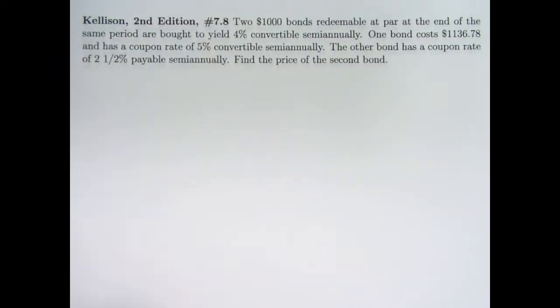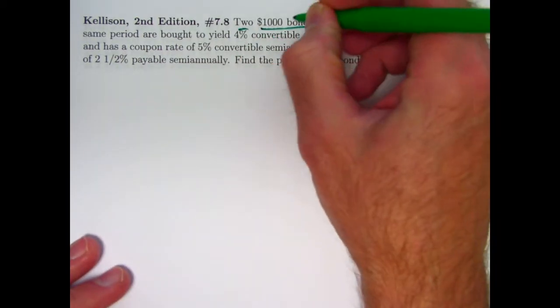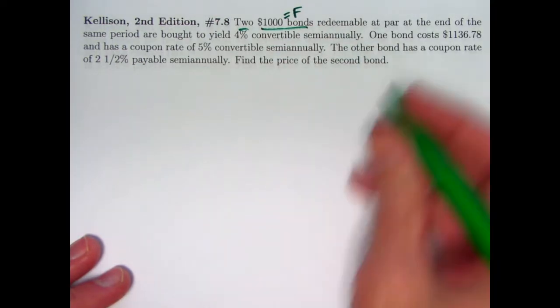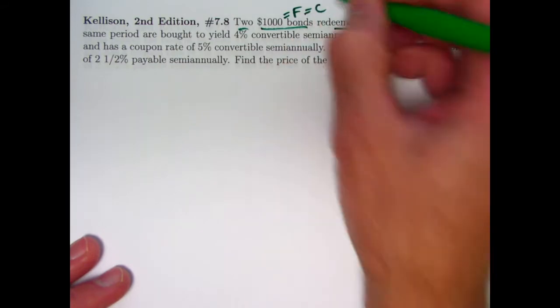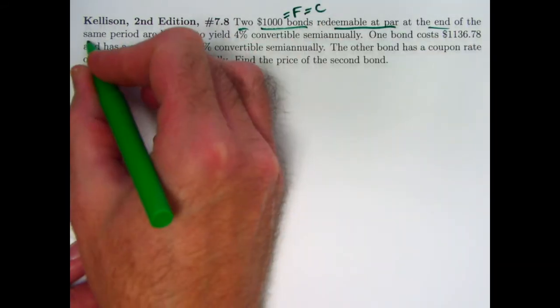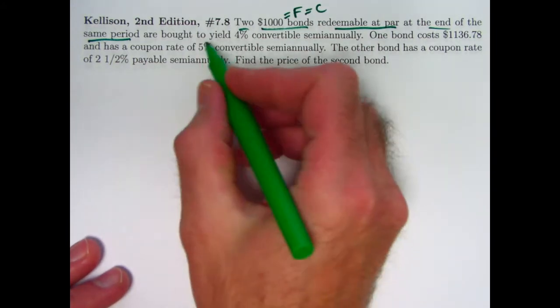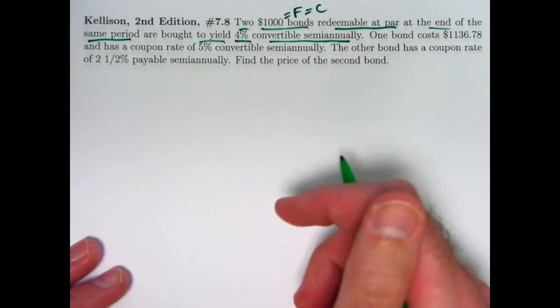So here is the problem statement itself. You've got two bonds, they're both $1,000 bonds, so that is the face amount, also called the par value. It's redeemable at par, so that's also the redemption value, F equals C. At the end of the same period these bonds have the same term. They both yield 4% convertible semi-annually, so that's 2% per half year.